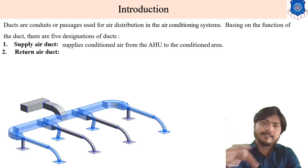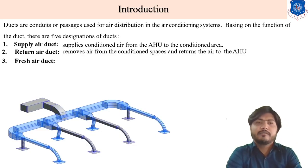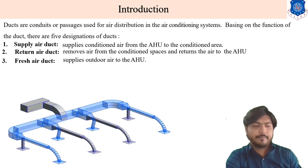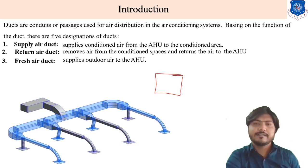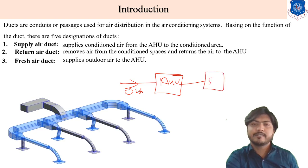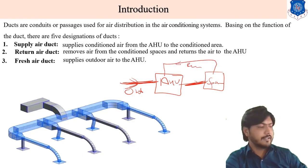The return air duct takes air returned from the conditioned space back to the AHU. The third is the fresh air duct, which supplies outside or outdoor air to the AHU. Outside air comes into the AHU and is supplied to the conditioned space. The supply air duct carries this air, and the return air duct brings it back to the AHU.